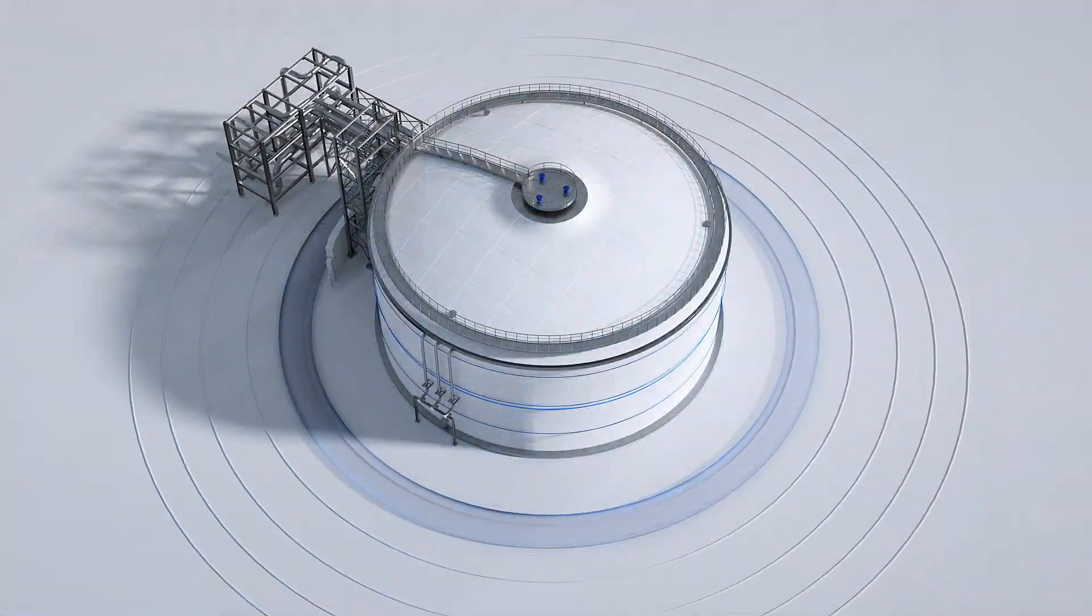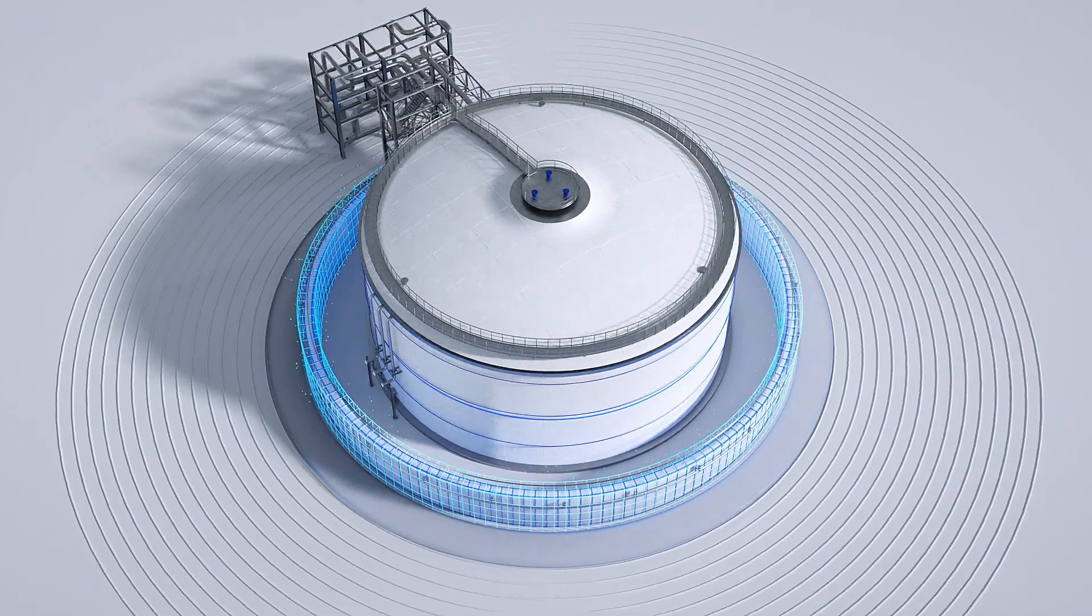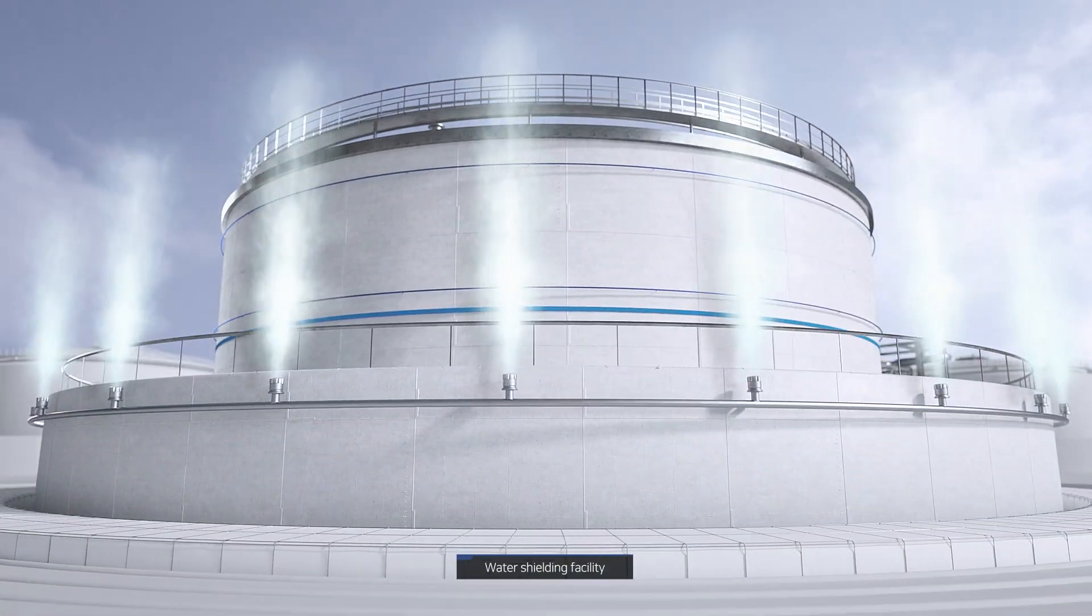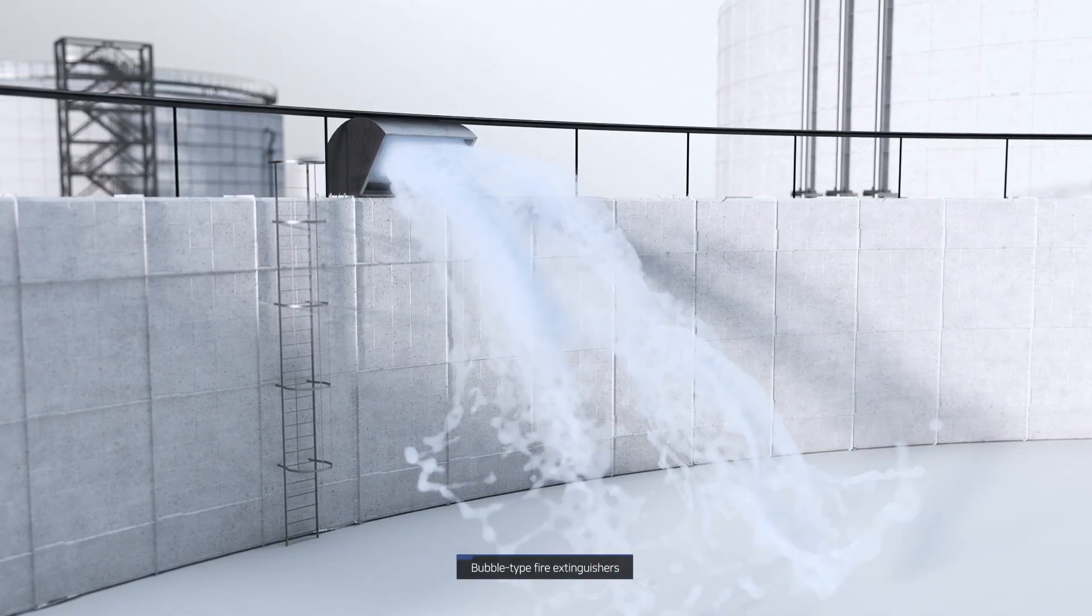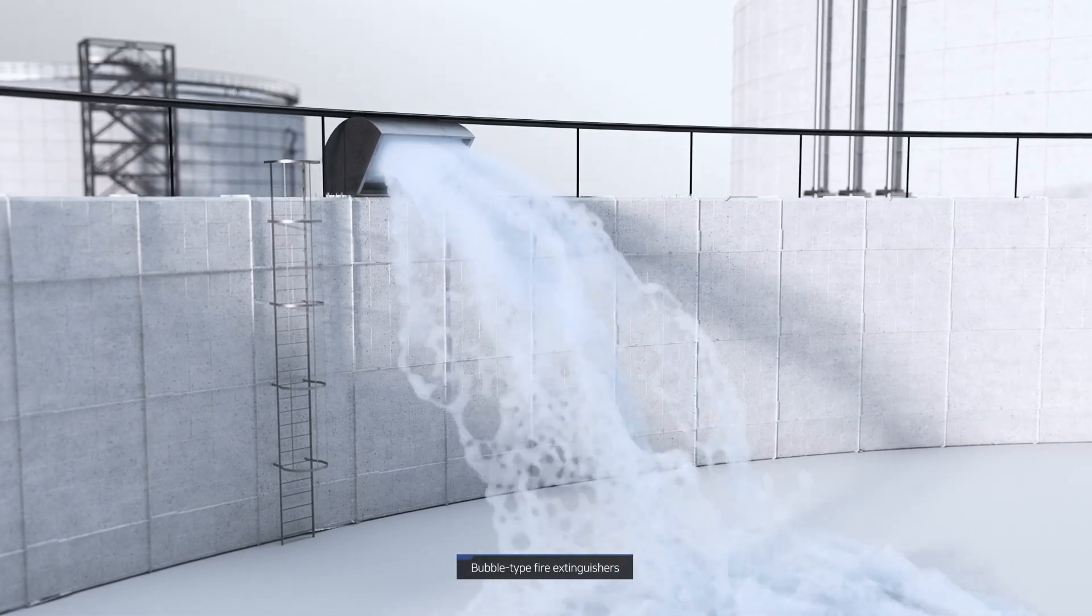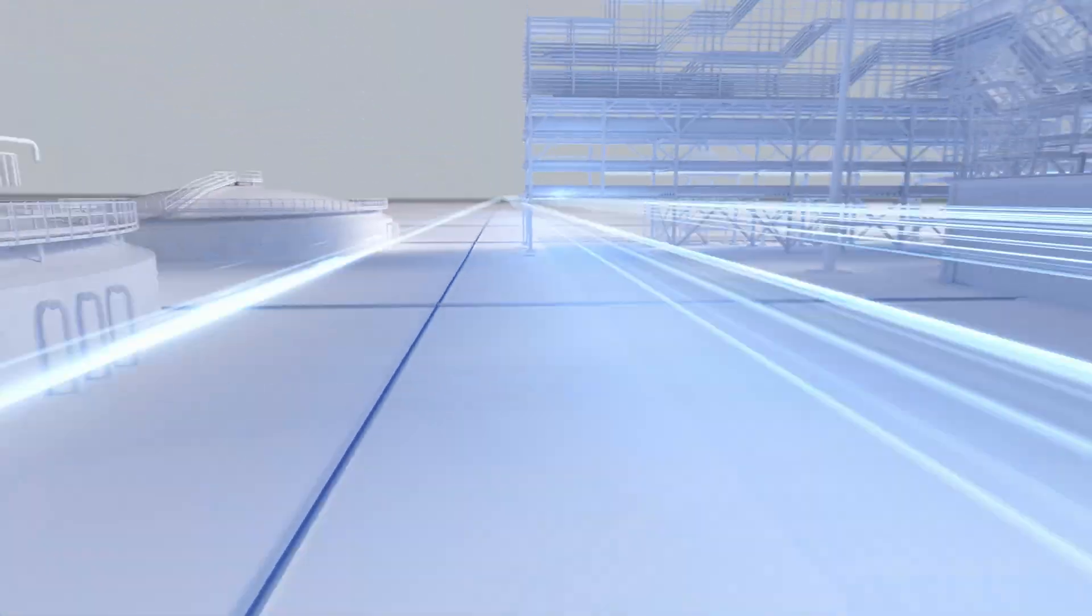Also, a dike is installed as an additional safety measure. Water curtain facilities for blocking heat radiation and bubble type fire extinguishers can prevent gasification of LNG by cutting off the air contact.